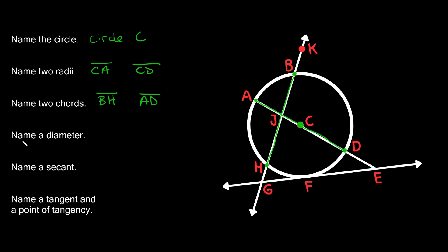Next it says name a diameter. Well, we kind of already did that. So we said that this chord is a special kind of chord. It's specifically the diameter. So this diameter is AD.